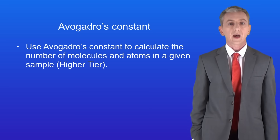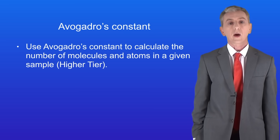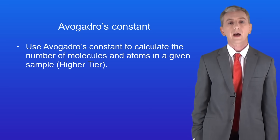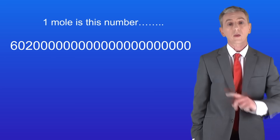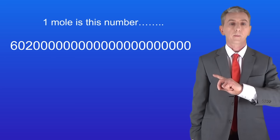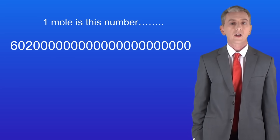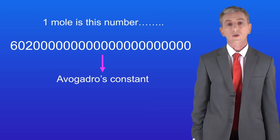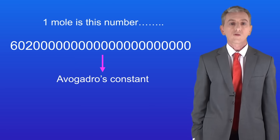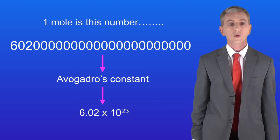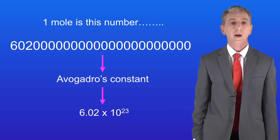We've been looking at moles and we've already seen that one mole is simply a shorthand way of saying this number. Scientists call this number Avogadro's constant. Normally we write this in standard form which is 6.02 times 10 to the power of 23.